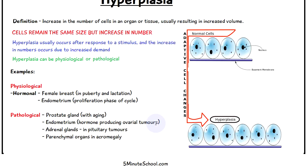Some examples of pathological hyperplasia include the prostate gland, which occurs with aging; the endometrium of the uterus, when there is a hormone-producing ovarian tumor; hyperplasia in the adrenal glands in cases of pituitary gland tumors; and parenchymal organs in acromegaly.